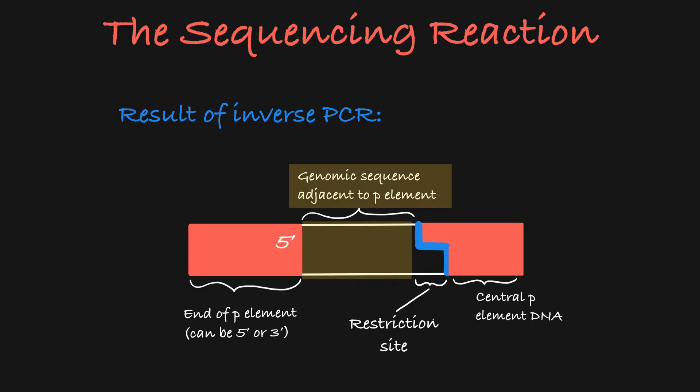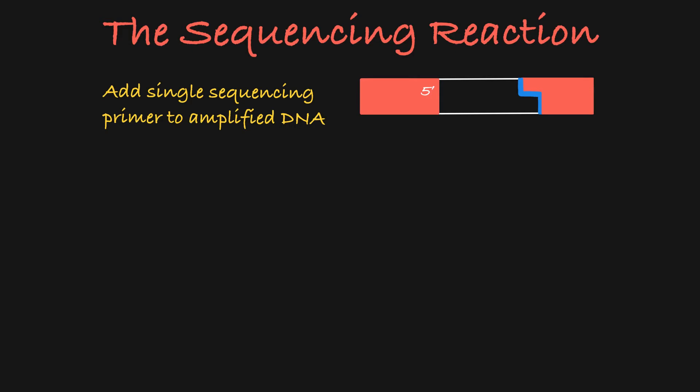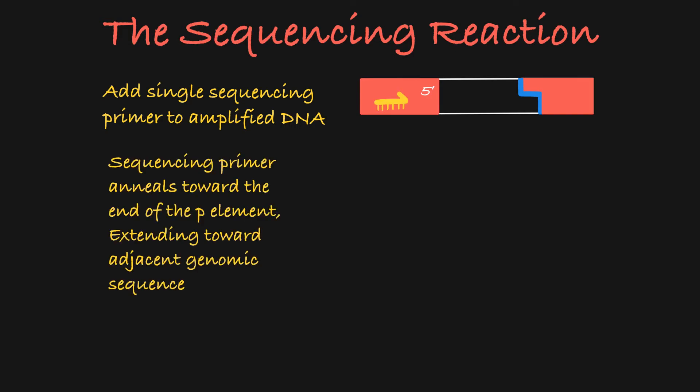It is this sequence that we want to find out. So we'll take this amplified segment and add to it a single sequencing primer that anneals toward the end of the P element, extending toward the adjacent DNA sequence.